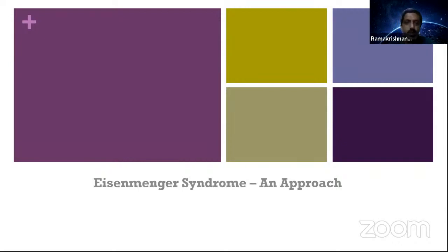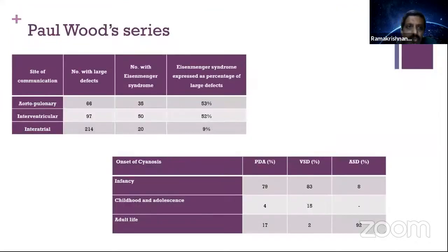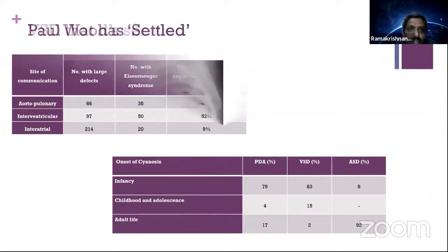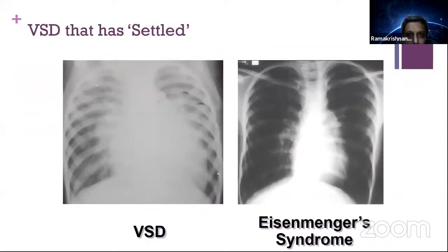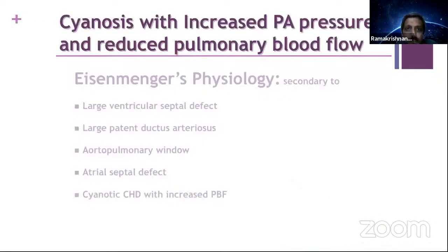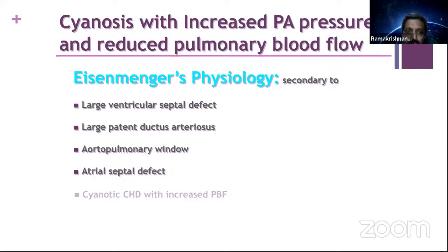Moving to Eisenmenger syndrome: many examiners ask about Paul Wood's series. Eisenmenger syndrome is cyanosis with increased pulmonary blood pressure and reduced pulmonary blood flow. It can result from a large ventricular septal defect, large patent ductus arteriosus, aortopulmonary window, or atrial septal defect. Rarely, cyanotic congenital heart disease with increased pulmonary blood flow like TGA, TAPVC, and truncus arteriosus can all become Eisenmenger at some point.